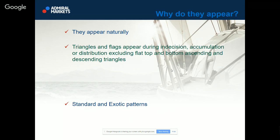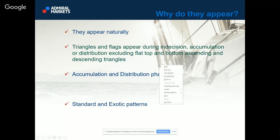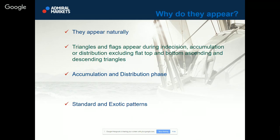These patterns will appear naturally. Triangles and flags appear during indecision, accumulation or distribution, excluding flat top and bottom ascending and descending triangles. If we take a pen and draw a triangle — this is indecision, and the price is going usually sideways. During a trend, we expect a breakout in the trend direction. So if we had a downtrend and the price made a triangle, we will try to trade the triangle in the south direction. When you see a triangle, you know the price is going sideways — it's in an indecision phase — and you cannot trade during indecision.